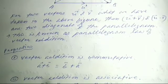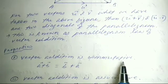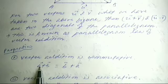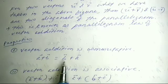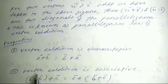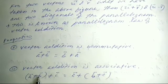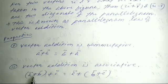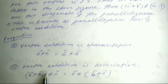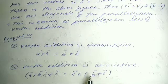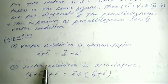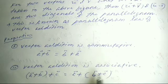The properties of vector addition are: first, vector addition is commutative — A vector plus B vector equals B vector plus A vector. Second, vector addition is associative — A vector plus (B vector plus C vector) equals (A vector plus B vector) plus C vector.